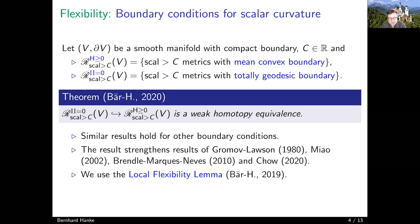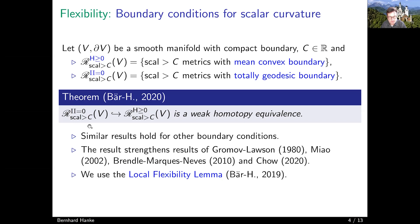The statement is that this canonical inclusion is a weak homotopy equivalence, meaning it induces isomorphisms in all homotopy groups. For this talk it is enough to think of actual homotopy equivalences: whenever you have a metric in the larger space, or a family of such metrics, you can deform them to metrics in the smaller space. So you can preserve the lower scalar curvature bound and improve the boundary condition from mean convex to totally geodesic — a typical flexibility result in scalar curvature geometry.